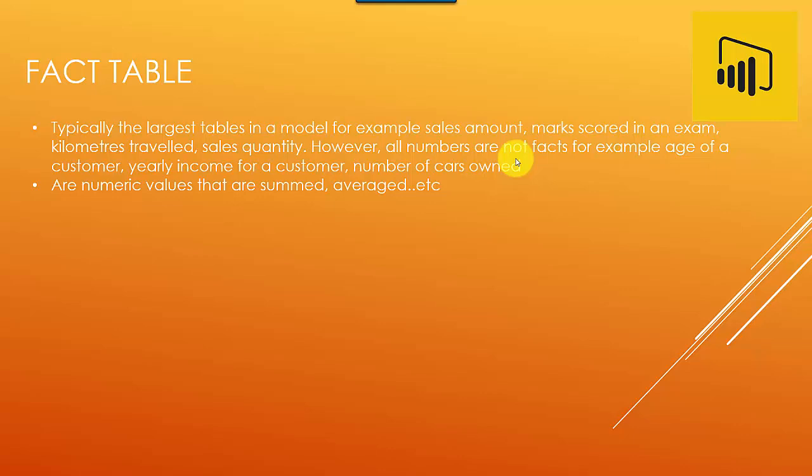For example, age could be an attribute of a customer and doesn't have to repeat. Yes, a customer is maybe 20 years old, but that is an attribute of the customer and it is captured separately as an attribute. Yearly income of a customer where you don't want to do too many analytics on that, or the number of cars owned by a customer.